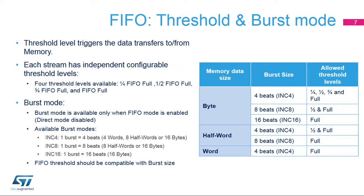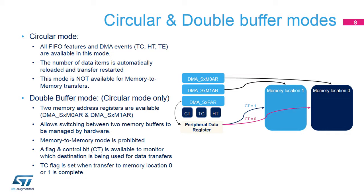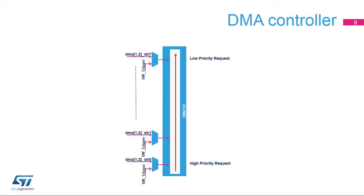Depending on the transfer direction on the memory port, when the FIFO threshold is reached, the FIFO is filled from or flushed to the memory location. Burst mode is only available when FIFO mode is enabled. When setting burst mode, the FIFO threshold should be compatible with the burst size, allowing the DMA streams to have the burst data available in the FIFO to carry out a burst transfer. DMA controllers support circular mode, allowing you to configure the number of data items to transfer once and automatically restart after a transfer-complete event. Double buffer mode is only available in circular mode; it allows automatic switching by hardware between two memory addresses each time a transfer-complete event occurs. In double buffer mode, a status flag and control bit, or CT, is available to monitor which destination is being used for data transfers.